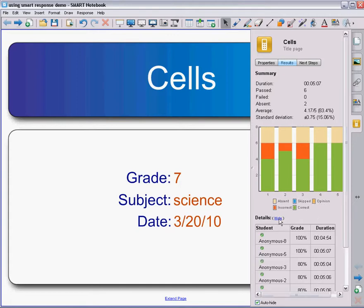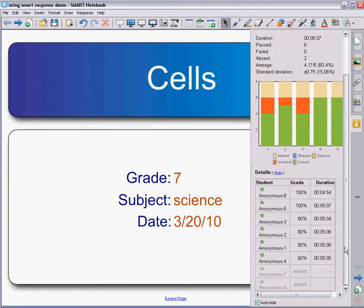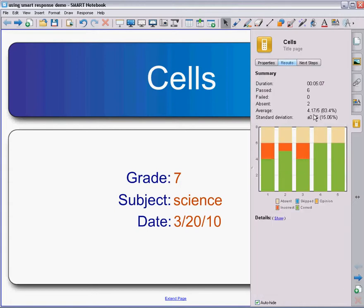I can also have details. Since I'm in anonymous mode, I don't have specific students, but I can look at the grades to see overall - I have two students with hundreds, two or three with eighties, one student with a 60, and the overall duration of how long they took on their quiz. So I can look if there's any red flags that stick out that I might want to try to address. That's an overall view of the results of this quiz.